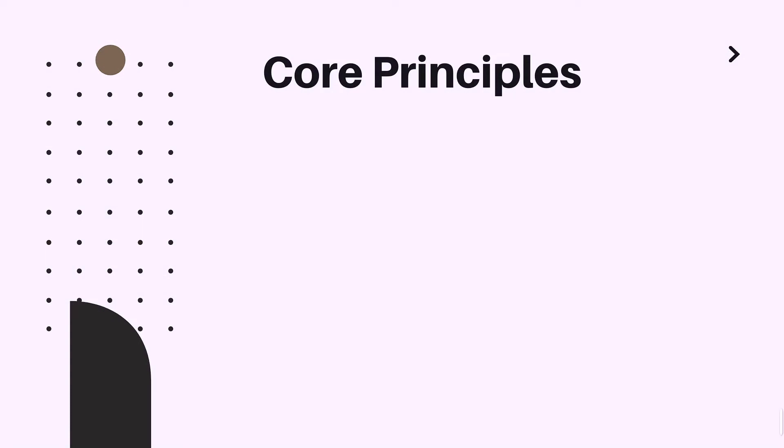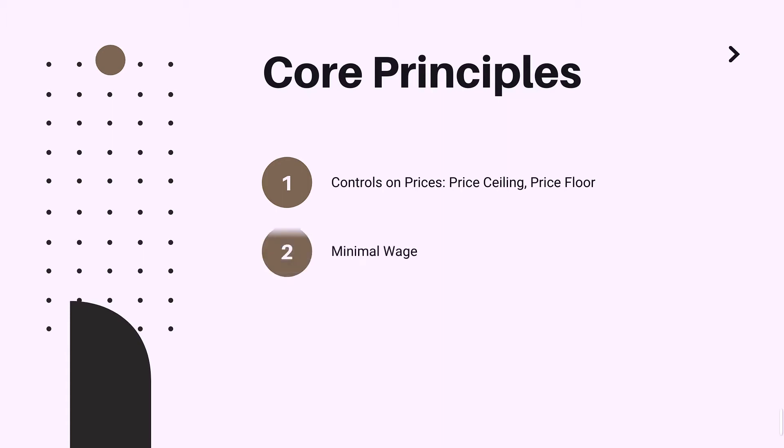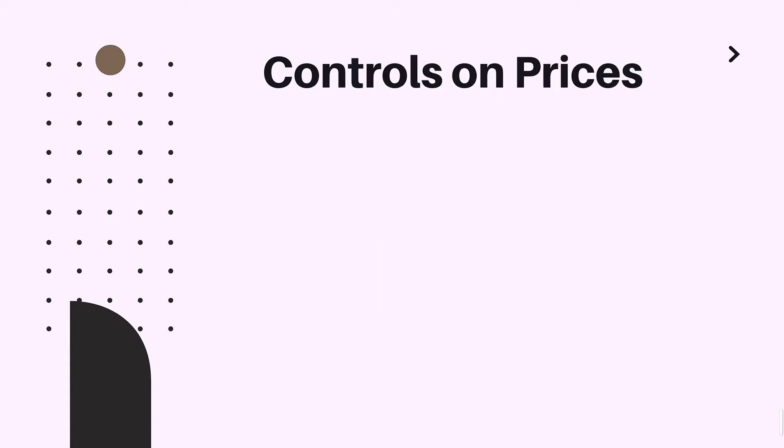Hi everyone, welcome to the review session of chapter 6: Supply, Demand and Government Policies. This is a very short but very important chapter. Today we will speak about controls on prices, namely price ceiling and price floor, we'll speak about minimum wage and its effects on the labor market, and finally about taxes.